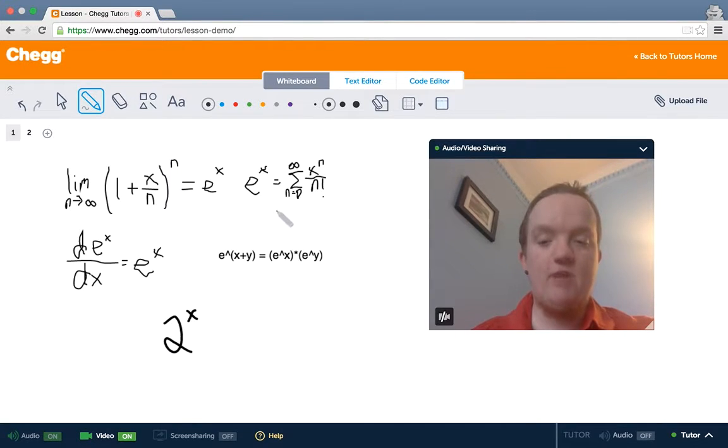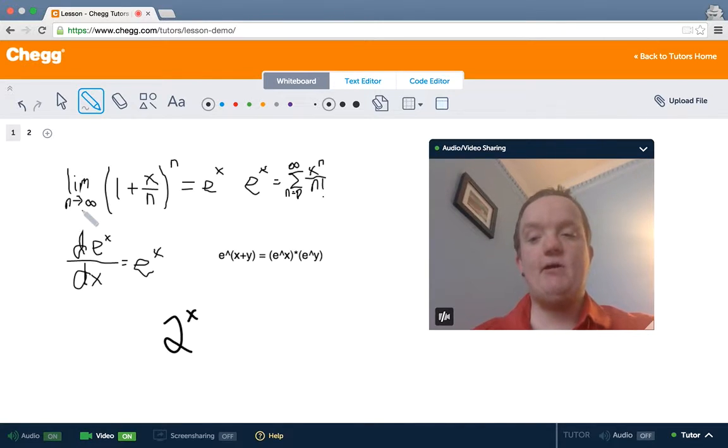These are all equivalent ways of defining e to the x, except for this one. That's a property of it. So e to the x can be defined as a limit, a limit as n goes to infinity of 1 plus x over n, all of that to the nth power.